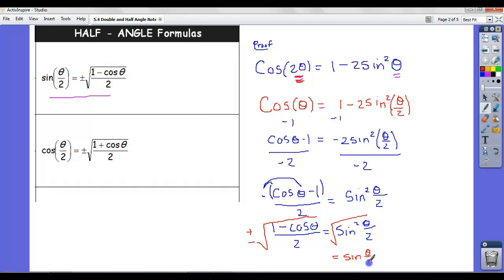the square root of sine squared of theta over 2 equals the sine of theta over 2. And this is plus or minus the square root of 1 minus cosine of theta over 2.